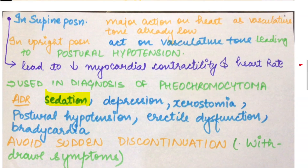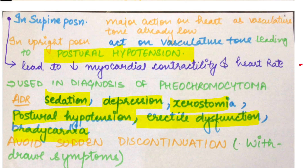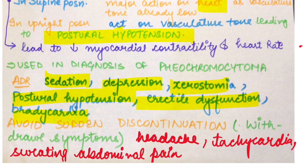ADRs of clonidine include sedation, depression, xerostomia (because salivary glands are not stimulated), postural hypotension, erectile dysfunction, and bradycardia due to sympathetic inhibition. We should not discontinue clonidine suddenly — avoid abrupt discontinuation — because withdrawal symptoms will occur, including headache, tachycardia, sweating, and abdominal pain. If stopped abruptly, blood pressure will rebound to pre-treatment levels. Transdermal preparations are also available, used once per week, though they may have skin-related problems.